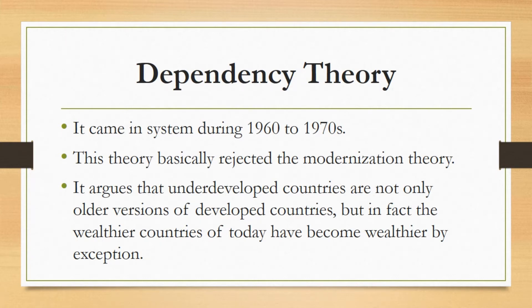This theory rejects the concept of modernization theory which says that internal resources are very important in determining economic capabilities and development. It says that besides internal factors, there are external factors also. This theory gives more importance to external factors like how one country is doing trade, with which countries it is doing trade, how it is exploiting other countries, or how it is being exploited. These external factors matter a lot in the progress and development of a particular country.